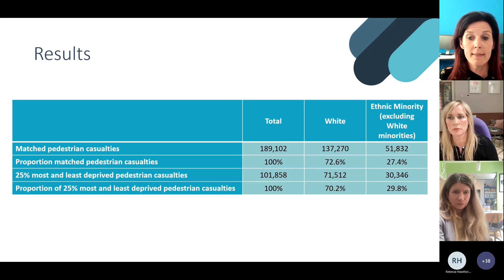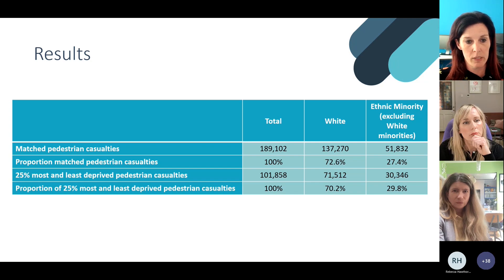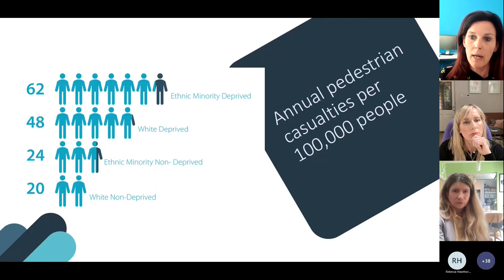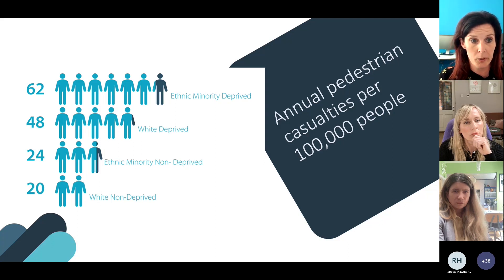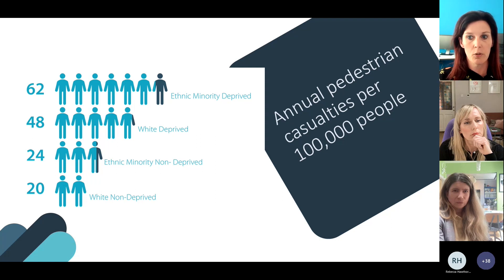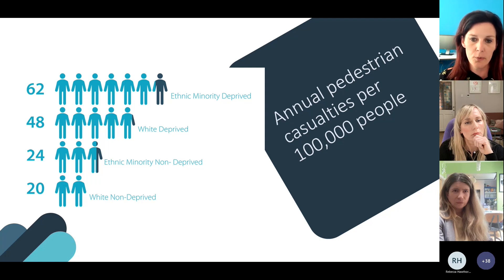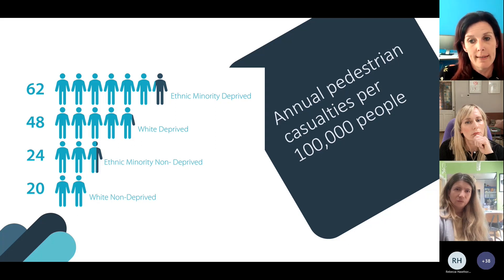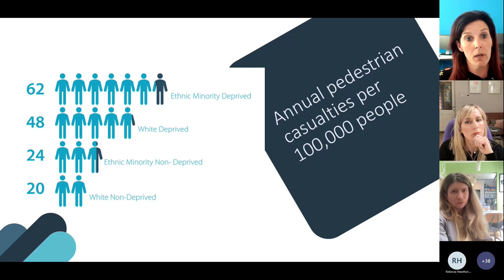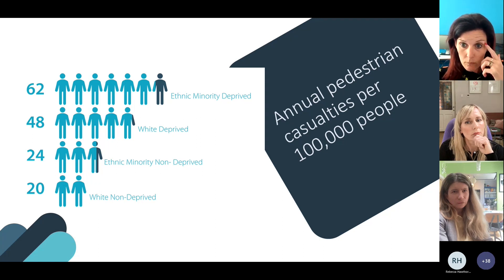Overall, 27.4% of pedestrian casualties are from an ethnic minority, and this increases to 29.8% when looking only at the most and least deprived casualties. Per 100,000 population, there were 62 pedestrian casualties from ethnic minority groups living in a deprived community. At the other end, there were 20 pedestrian casualties per 100,000 population from the least deprived communities who were White.